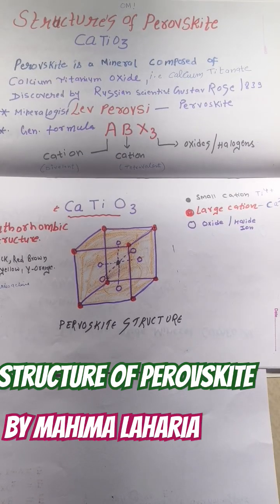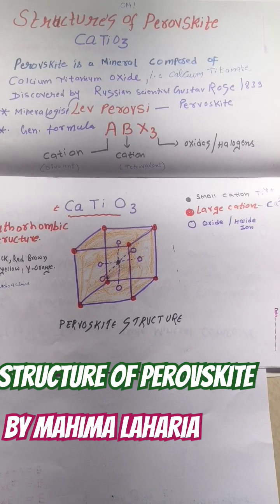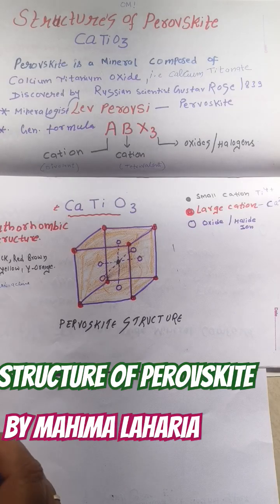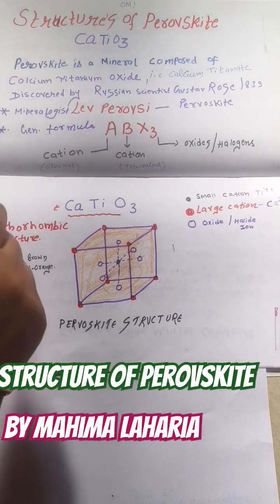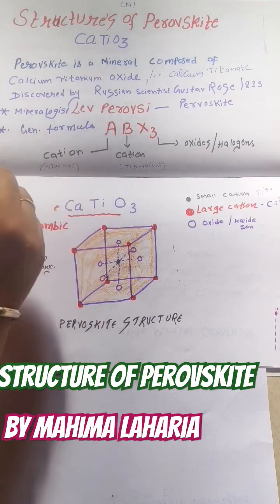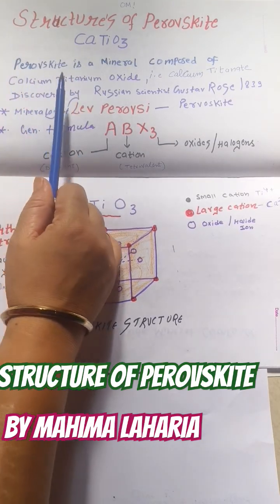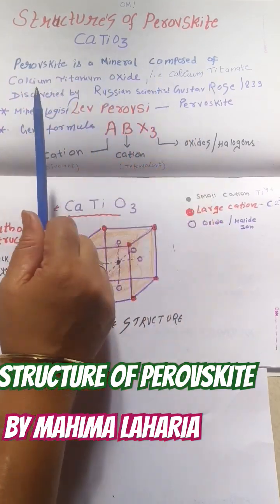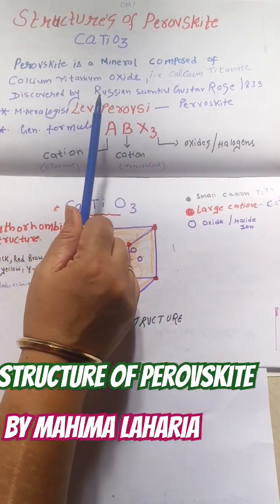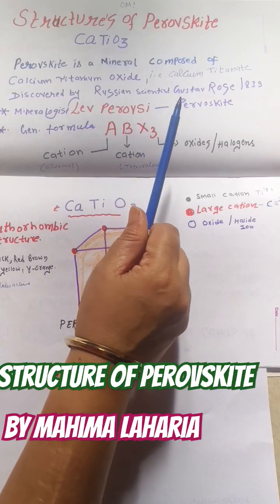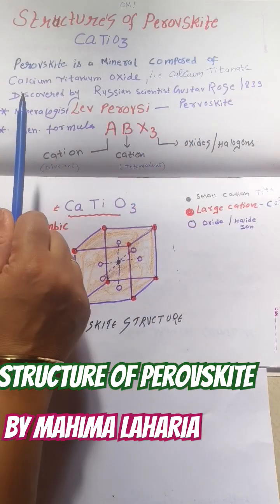Hello students, welcome back to my YouTube channel Pacific Chemistry Classes. Let us see what is the structure of perovskite. The formula is calcium titanium oxide. Perovskite is a mineral composed of calcium titanium oxide, that is calcium titanate.